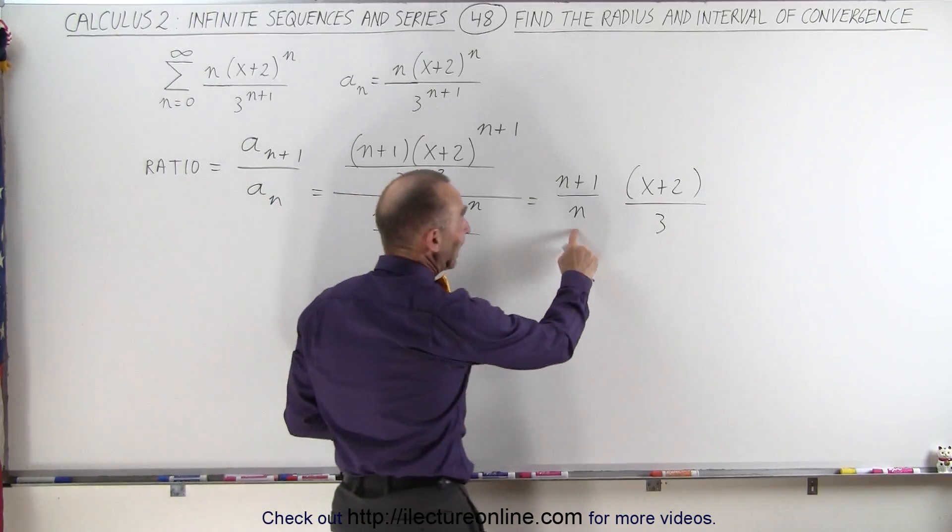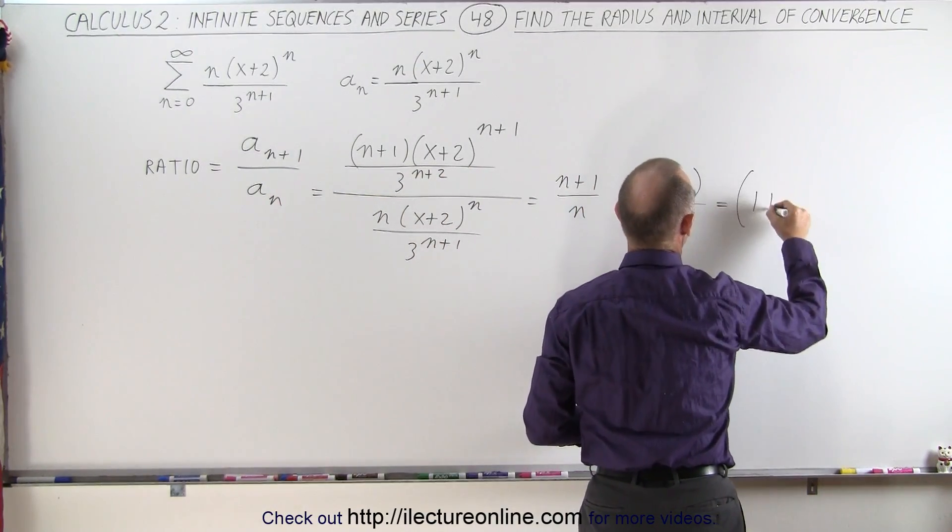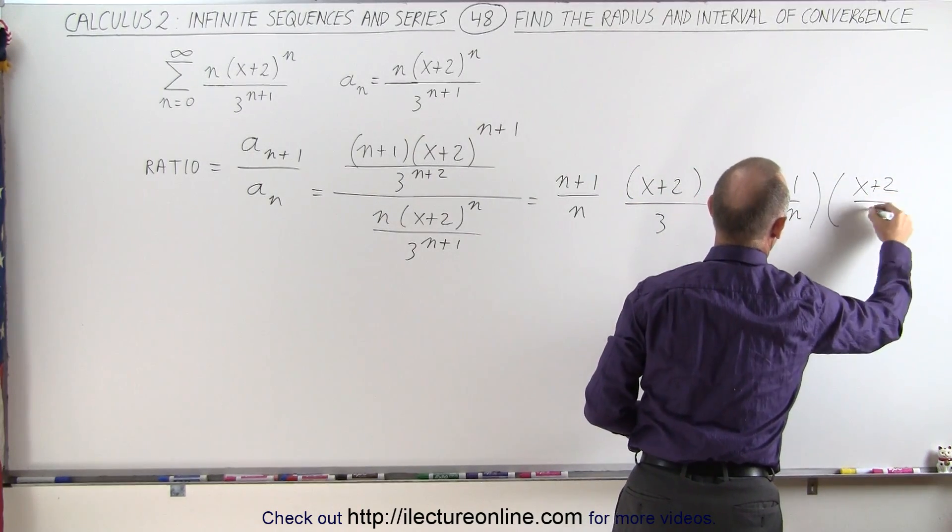Now what we can do here is divide n into the numerator, so this can be written as (1 + 1/n) times (x+2) divided by 3.